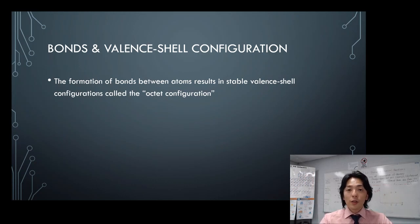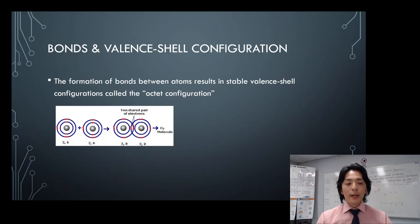Octet configuration means the atom is having 8 electrons in the outermost shell in Bohr's model, not the subshell notation.